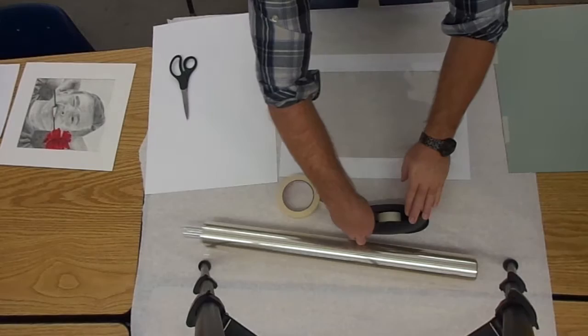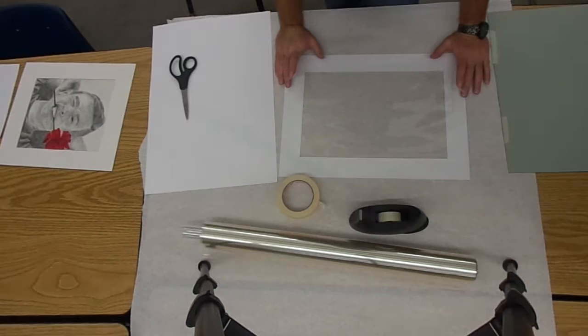We're going to tape this down. With this, we're going to use clear scotch tape for this. I'm going to take two pieces of scotch tape.